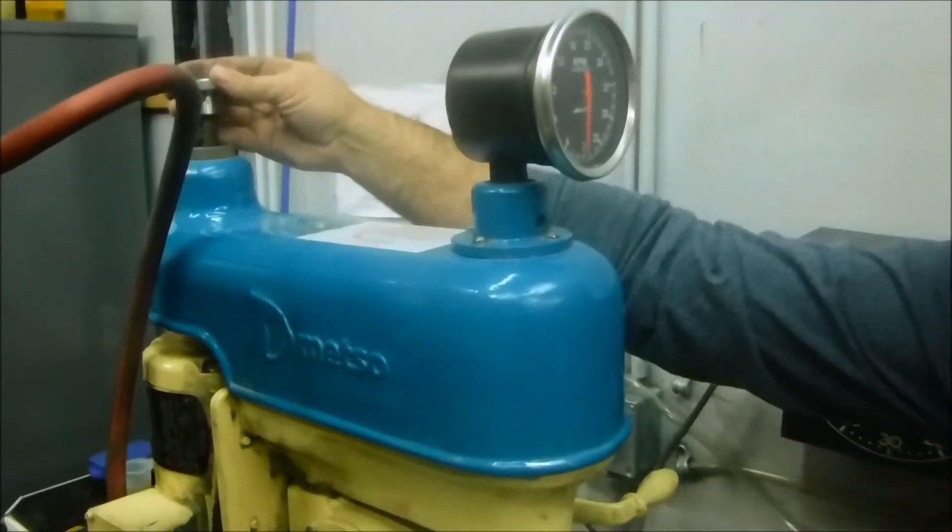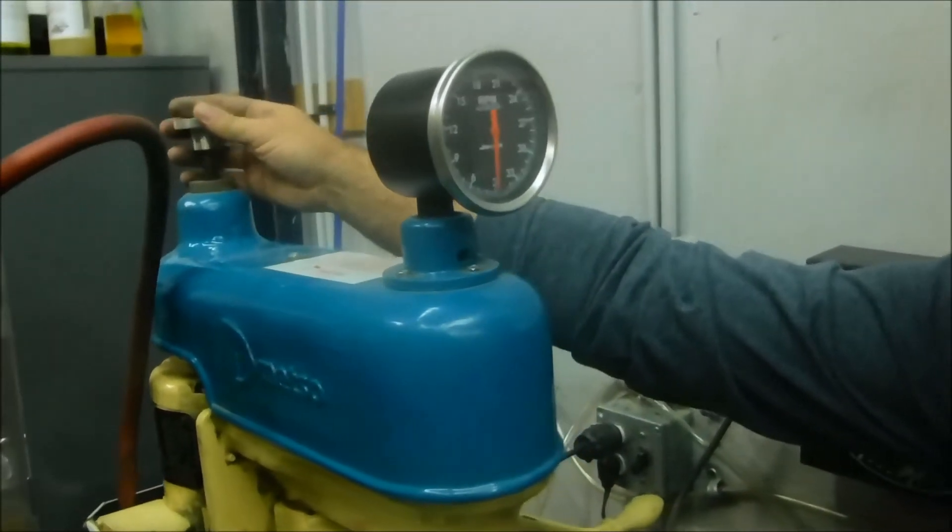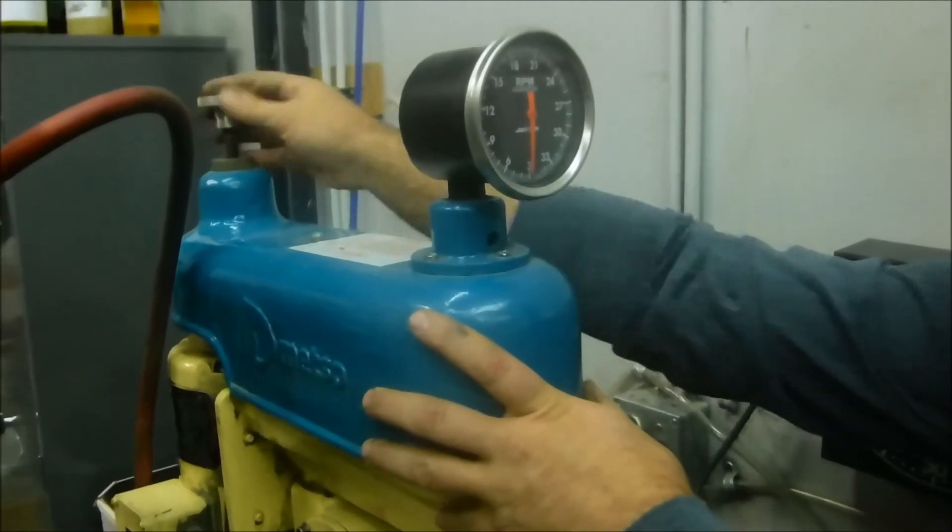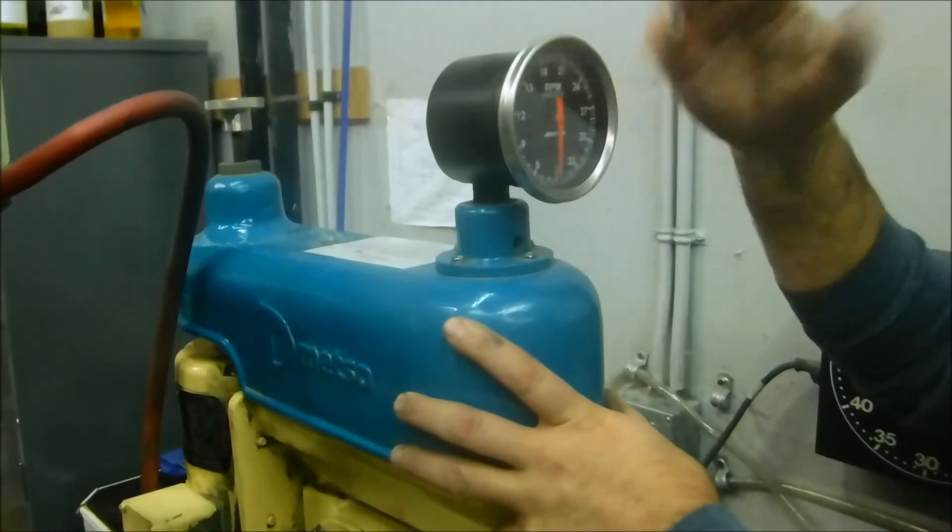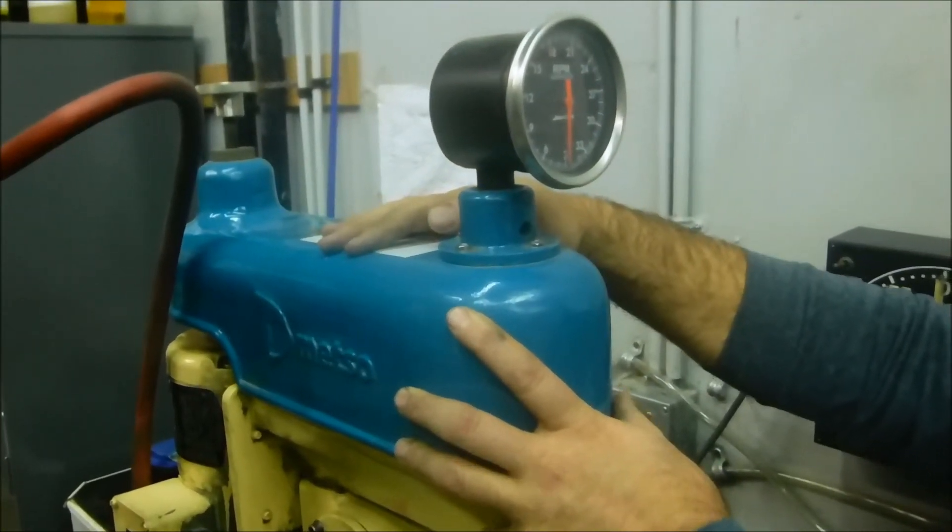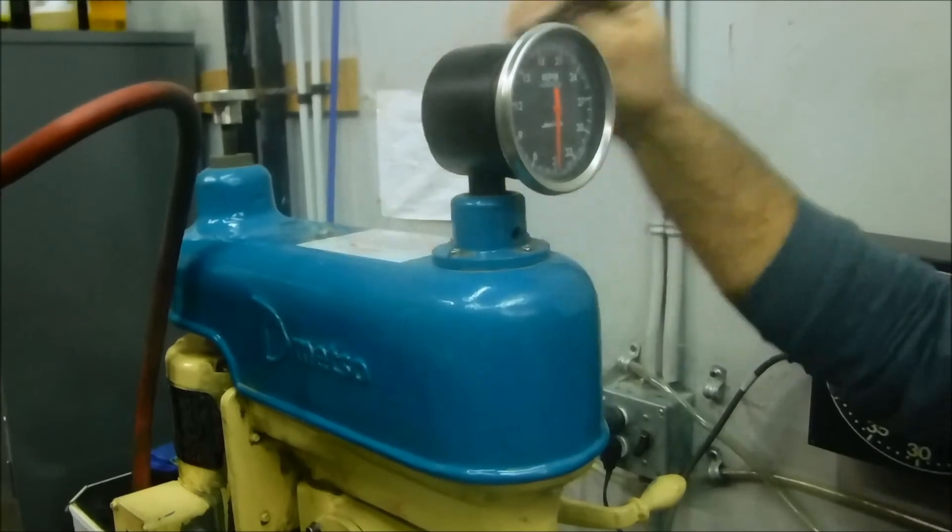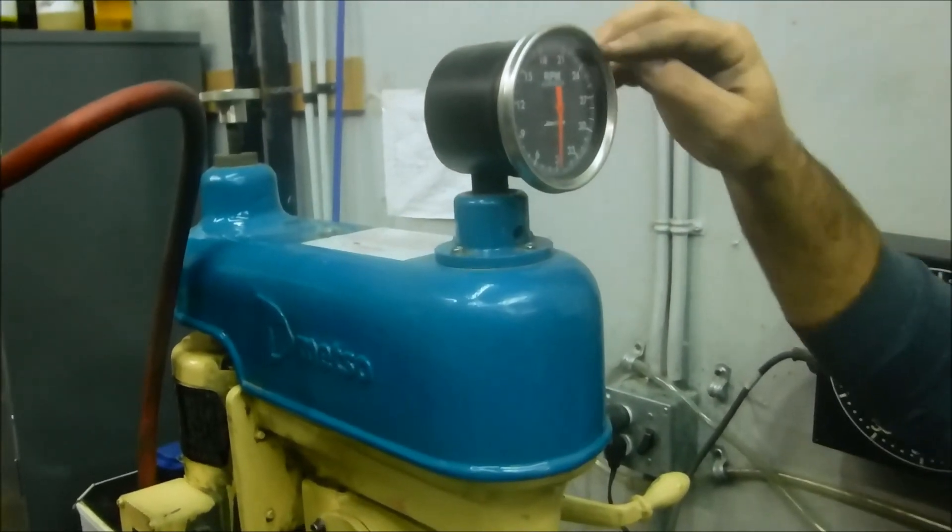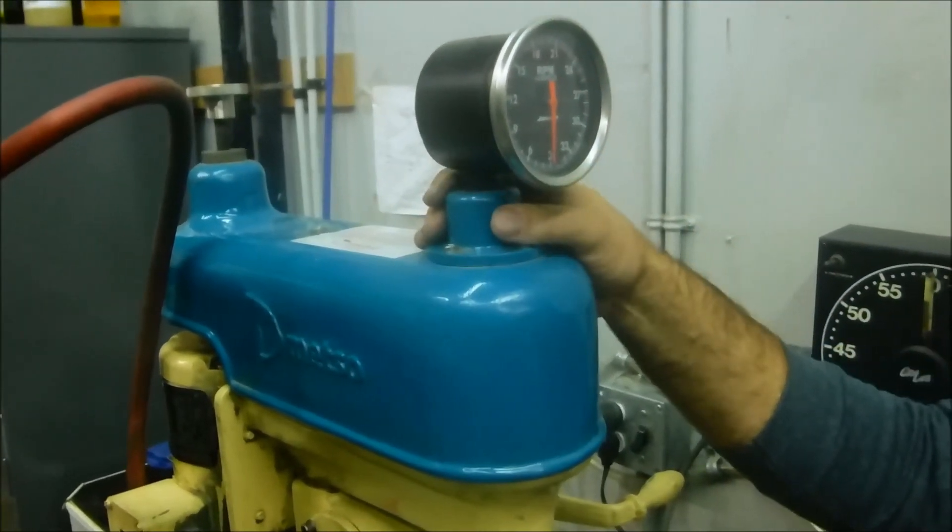You change the speed of the machine and agitator by changing this knob back here. We typically run between 900 and 1500 RPM on the agitator for most flotation work. As you can see, it realistically goes up to about 2400 RPM.